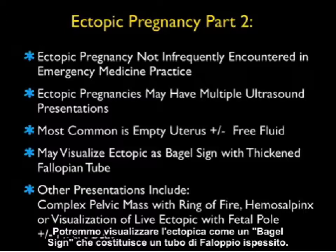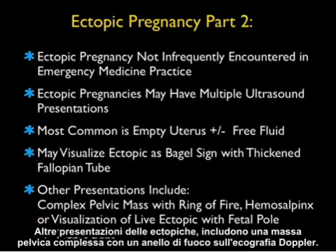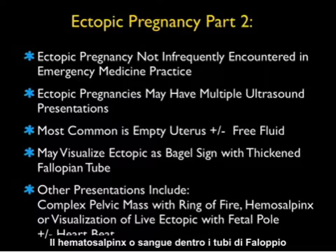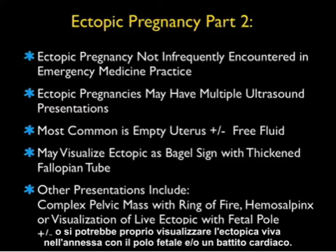We may actually be able to visualize the ectopic as a bagel sign, which constitutes a thickened fallopian tube. Other presentations include a complex pelvic mass with a ring of fire on Doppler sonography, hemosalpinx or blood within the fallopian tube, or you may actually be able to visualize the live ectopic in the adnexa with a fetal pole and/or heartbeat.